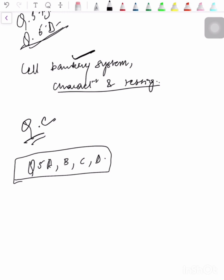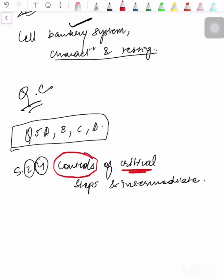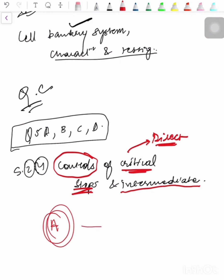The fourth point is control of critical steps and intermediates. Critical steps are those steps which have a direct impact on the quality, safety, and efficacy of your drug substance or drug product, and the same applies to intermediates. For example, if you start with compound A and want to produce compound D, the critical intermediates arise during the reaction steps from A through to D.